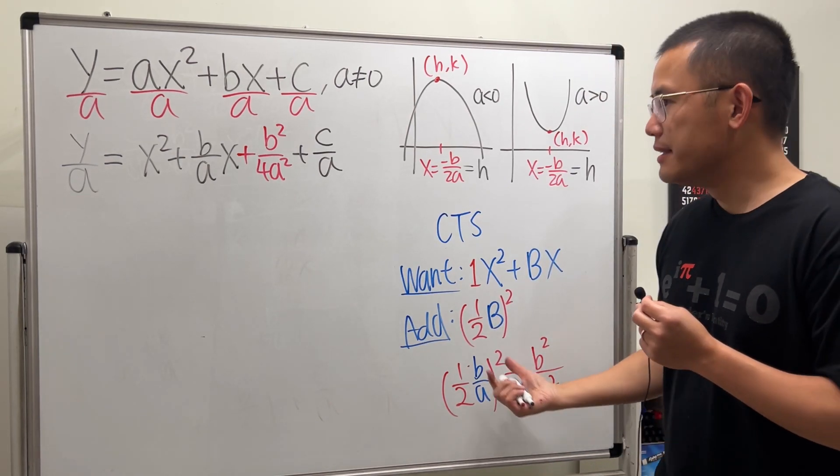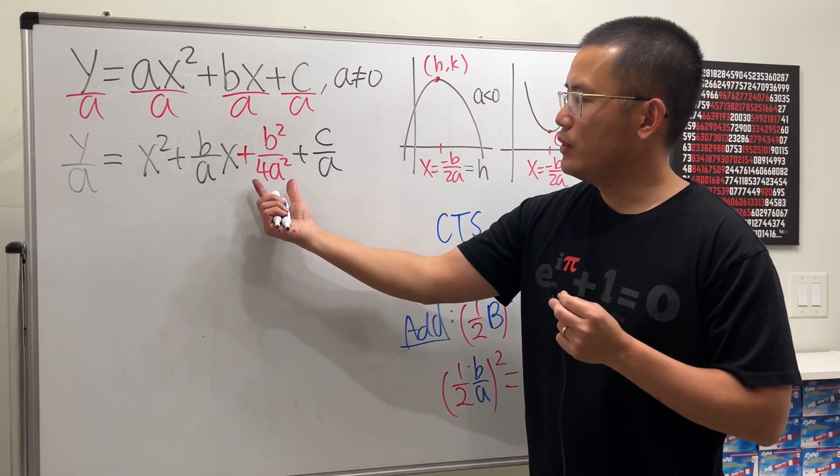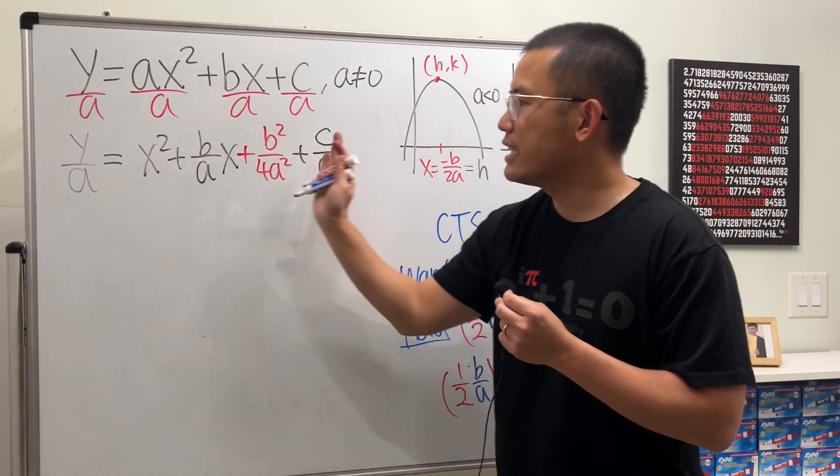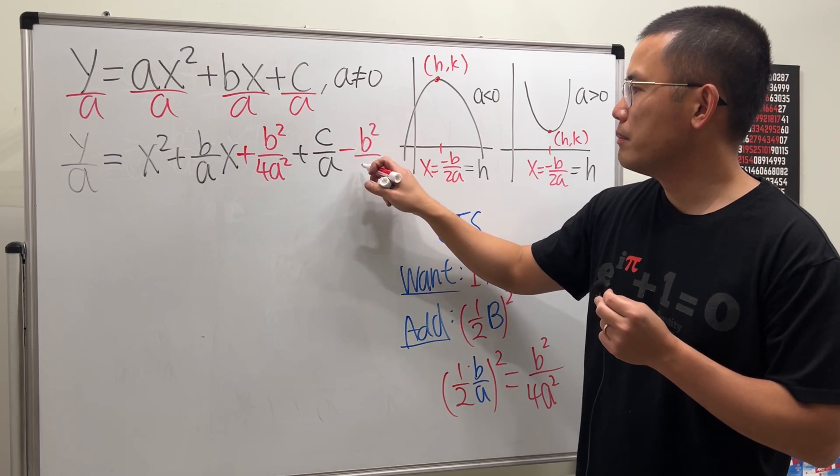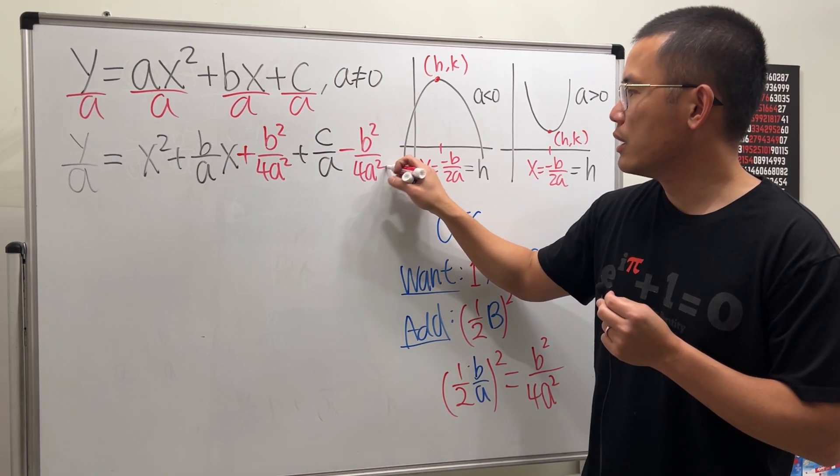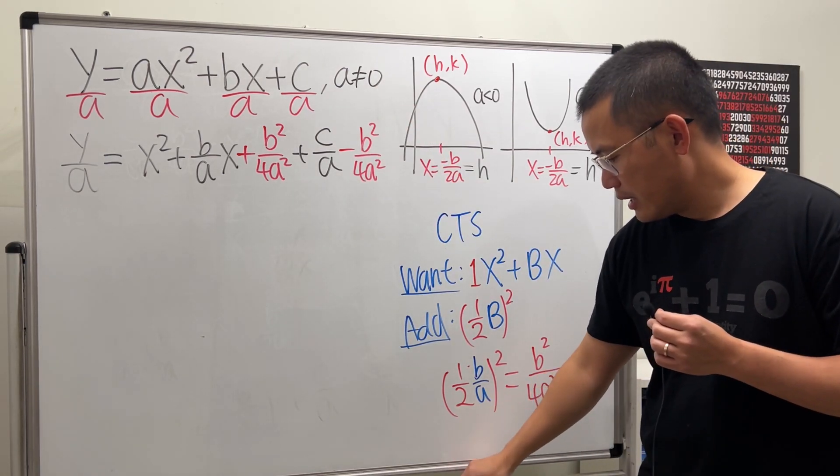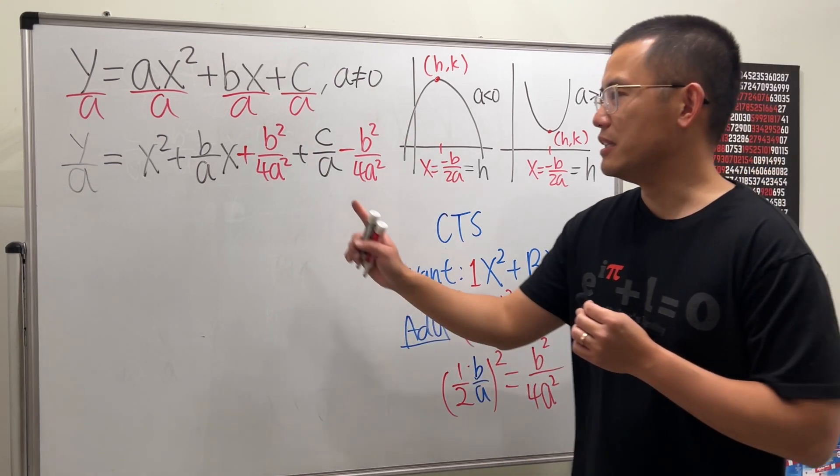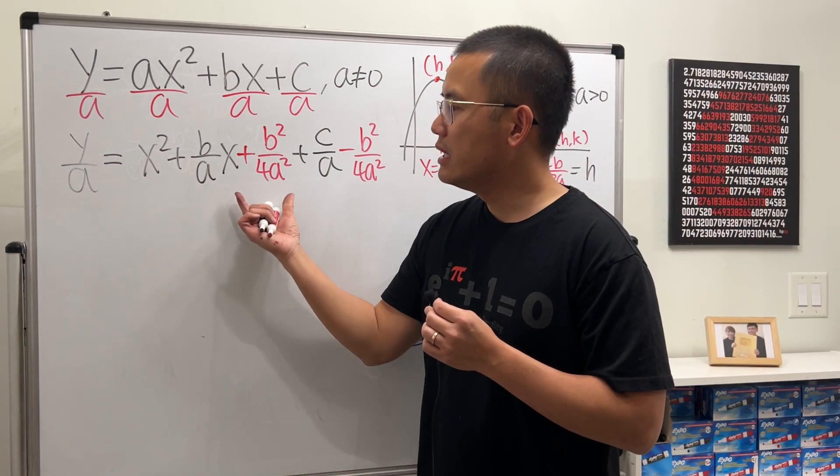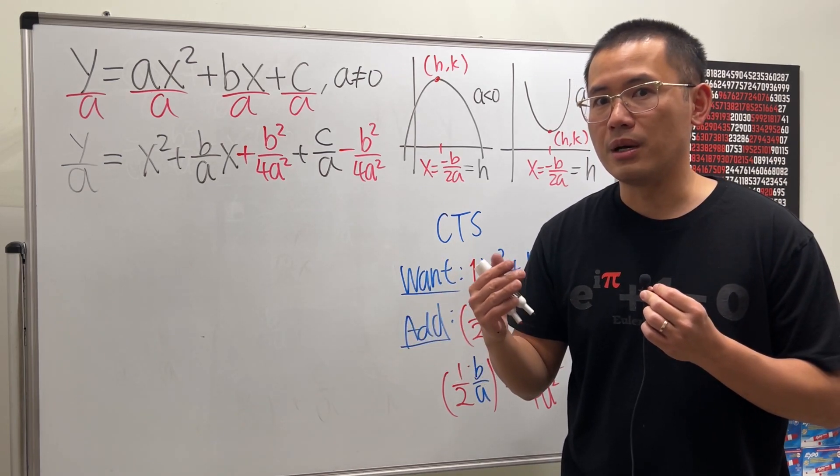This is what we are going to add right here. Plus b squared over 4a squared. Now usually we will add this to both sides. But you can also do this. If you add it here, on the same side of the equation, just go ahead, subtract it, so that they are just going to be zero. We didn't change the value of this equation. Why is this the magic number? Because this is so magical.